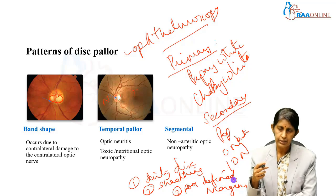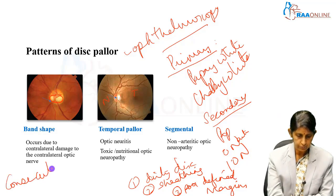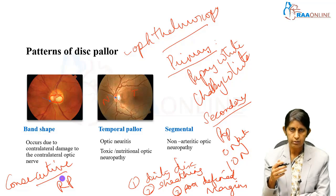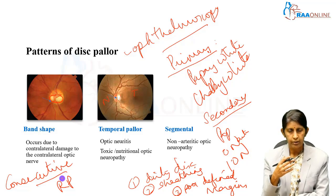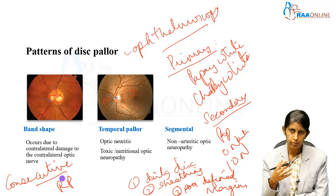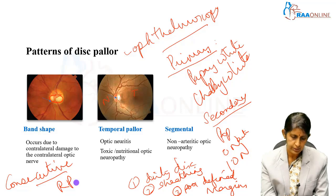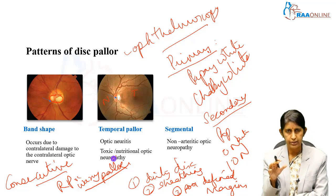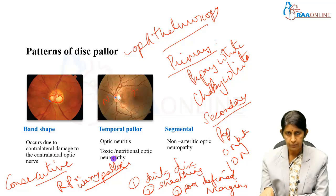Consecutive optic atrophy occurs following significant retinal disease. The commonest cause is retinitis pigmentosa, but it can also occur following excessive pan-retinal photocoagulation where the entire choroid and retina has been destroyed, or in patients with choroiditis involving inflammation. The classical feature of consecutive optic atrophy is a waxy pallor of the optic disc — this is a very important descriptor. This completes the ophthalmoscopic classification of optic atrophy.